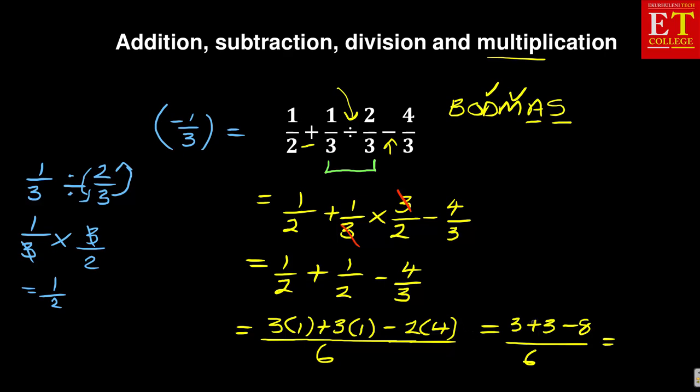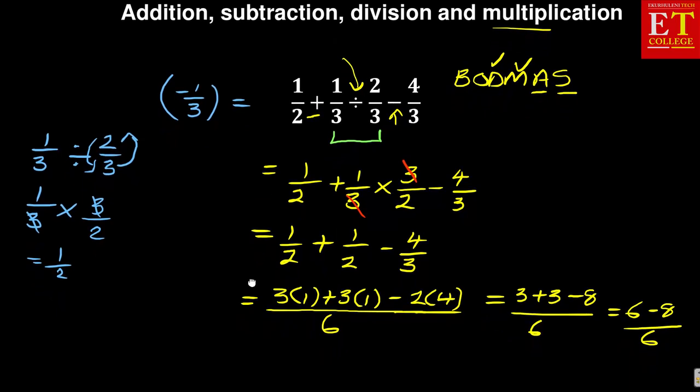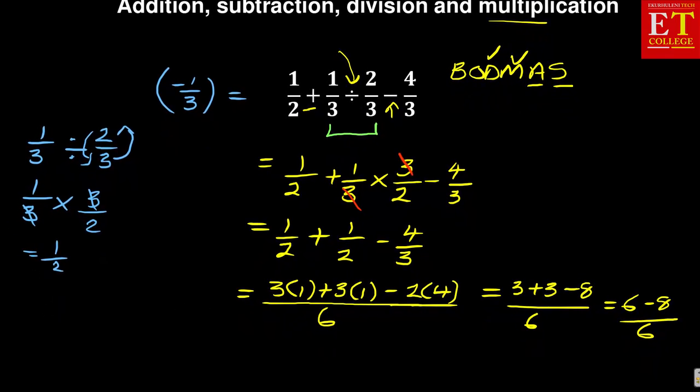And then this continues to become 3 plus 3 minus 8 over 6. This continues then to become 3 plus 3 is 6 minus 8 over 6.